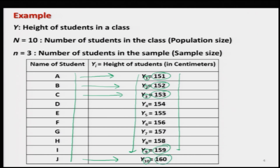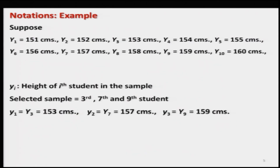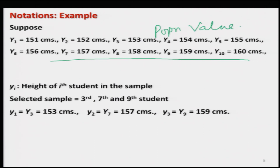Just so you do not forget what is your population and what are the values of the units — the names are in alphabetical order, units Y_1 through Y_10 correspond to heights 151 through 160. So it is easy to remember: if capital Y_6 is selected, that means the value 156 has been selected. These are my population values, and I denote capital Y to be the height.